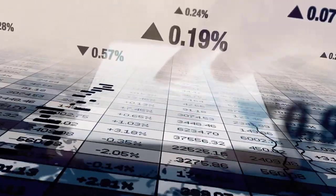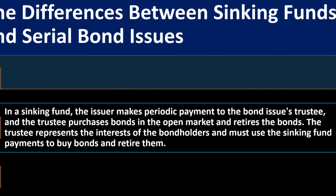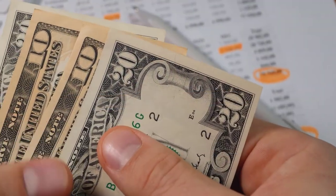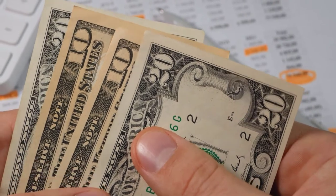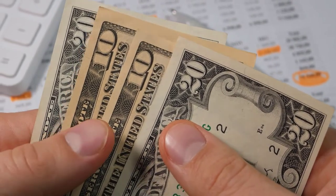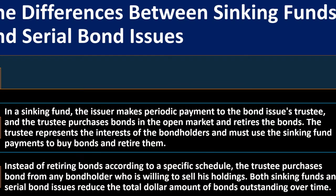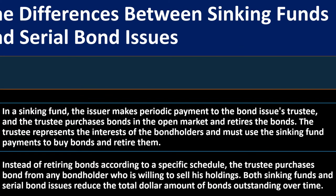The trustee represents the interests of the bond holders and must use the sinking fund payments to buy bonds and retire them. If the issuer has a sinking fund, they can use it to pay off bonds at maturity or to buy back their own bonds from the market before maturity. Instead of retiring bonds according to a specific schedule, the trustee purchases bonds from any bond holder who is willing to sell their holdings.